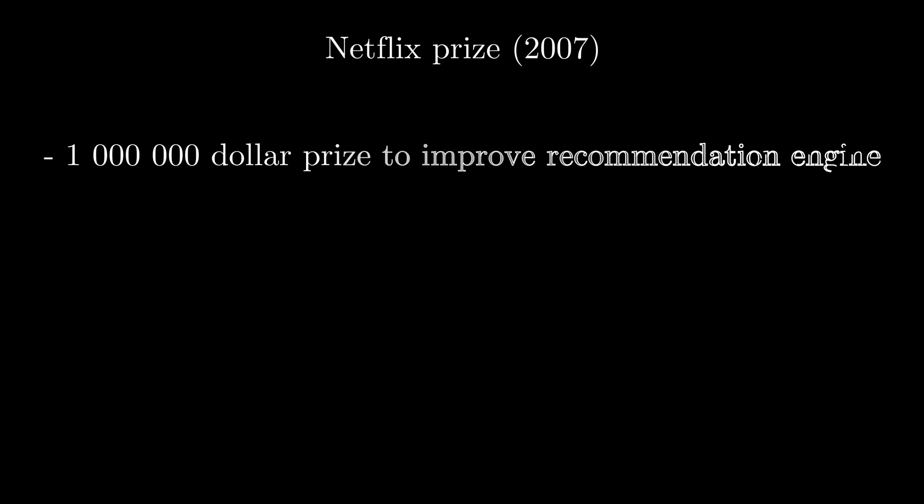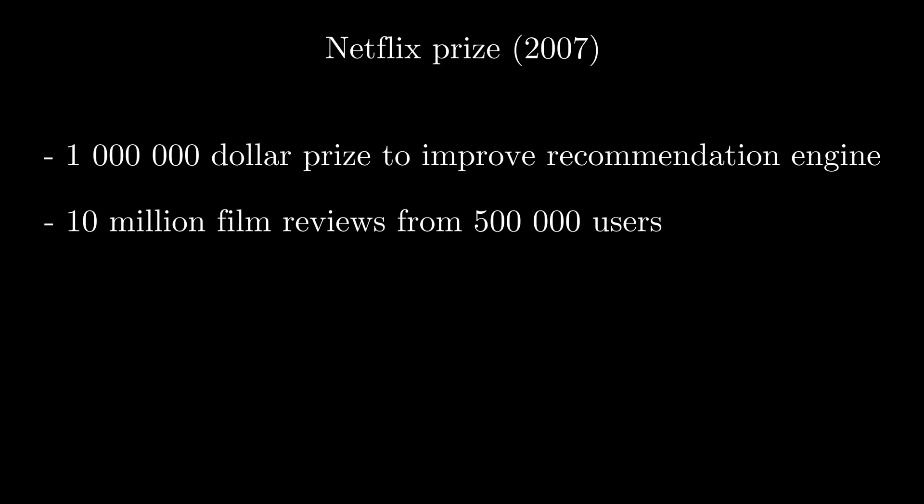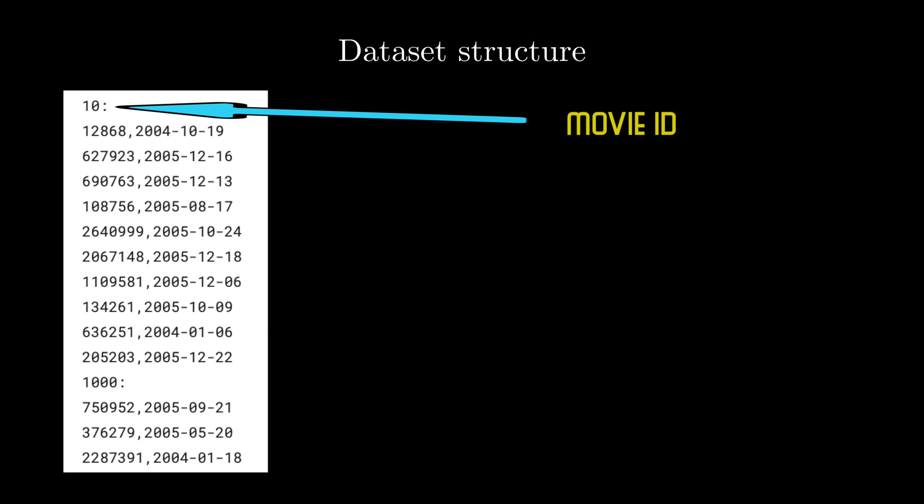In 2007, Netflix launched a contest for creating a better recommendation engine. A dataset containing 10 million film reviews from 500,000 of Netflix users was published for anybody to analyze it and create a better algorithm. Obviously, Netflix could not disclose users' names or any other sensitive data, so they anonymized users by assigning them with numerical IDs.